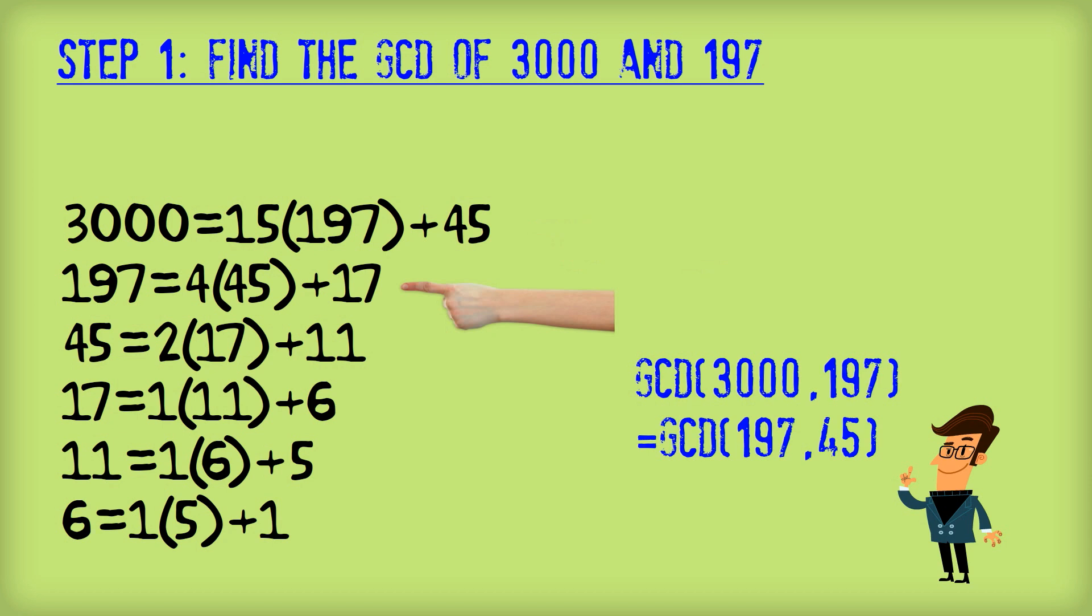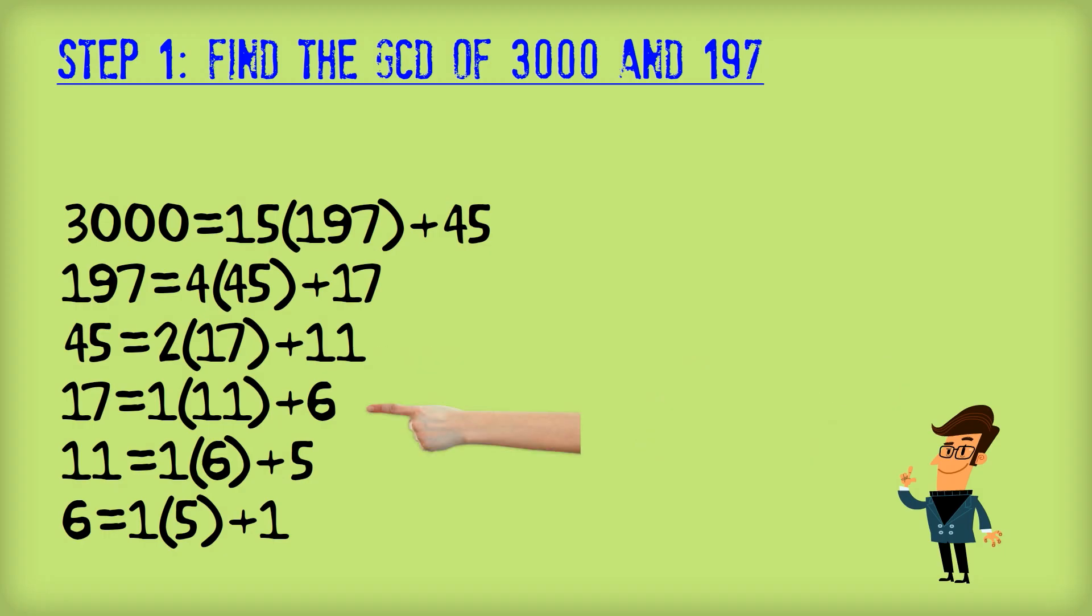So here I'm working out the remainder when I divide 197 by 45 and I get a remainder of 17. So now I know that the GCD of 3000 and of 197 is the same as the GCD of 45 and 17, which is the same as the GCD of 17 and 11, the GCD of 11 and 6, the GCD of 6 and 5, and the GCD of 5 and 1. And the GCD of 5 and 1 is 1.